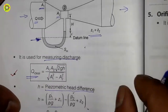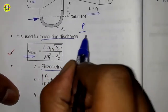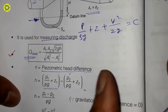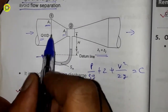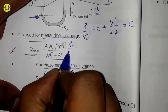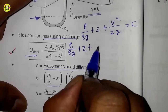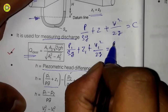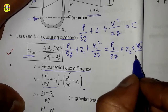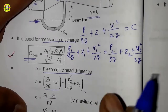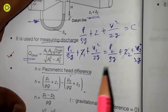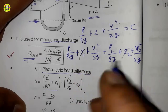Bernoulli's equation is: p/ρg + z + v²/2g = constant. Applying this between section 1 (inlet, area A1) and section 2 (throat, area A2): p1/ρg + z1 + v1²/2g = p2/ρg + z2 + v2²/2g. Since z1 = z2, the gravitational terms cancel out.